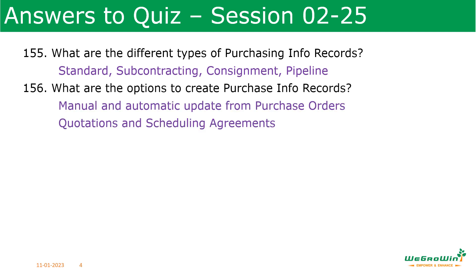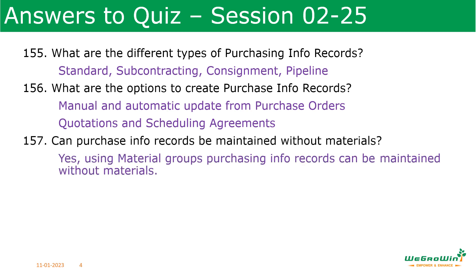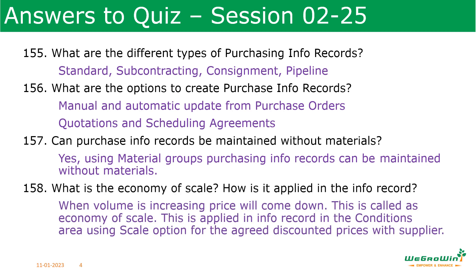What are the options to create purchasing info records? Purchasing info records can be created manually or automated. Automatic update will be done from purchase orders, quotations, and scheduling agreements. Can purchasing info records be maintained without materials? Yes — using material groups, purchasing info records can be maintained without materials. What is economy of scale? When the volume is increasing, price will come down — that is called economics of scale. This is applied in the info record in the conditions area, using the scale button for agreed discounted prices with the supplier.